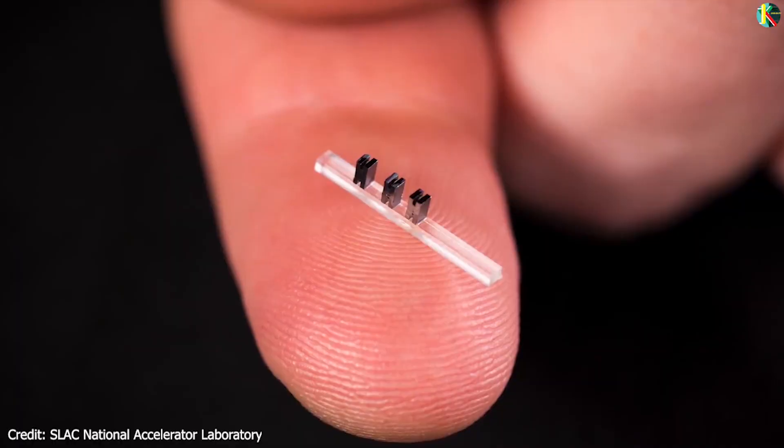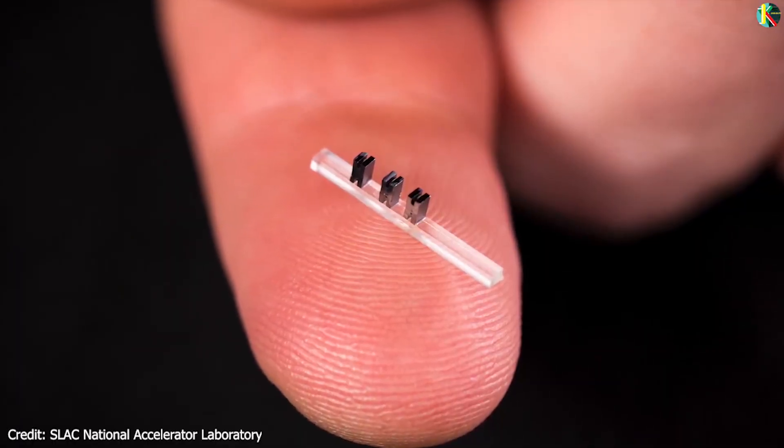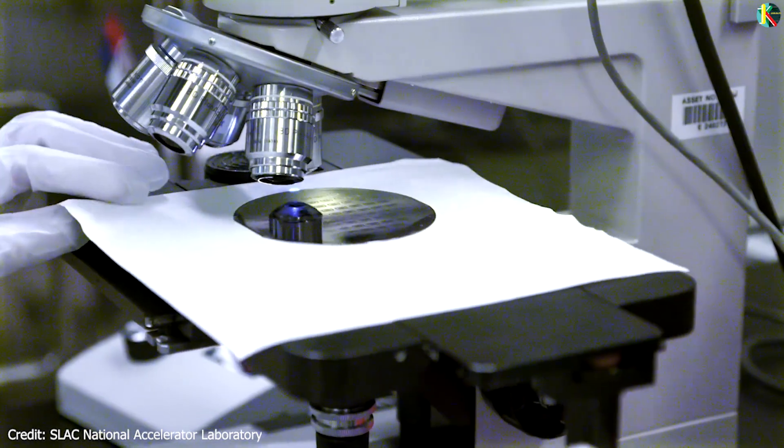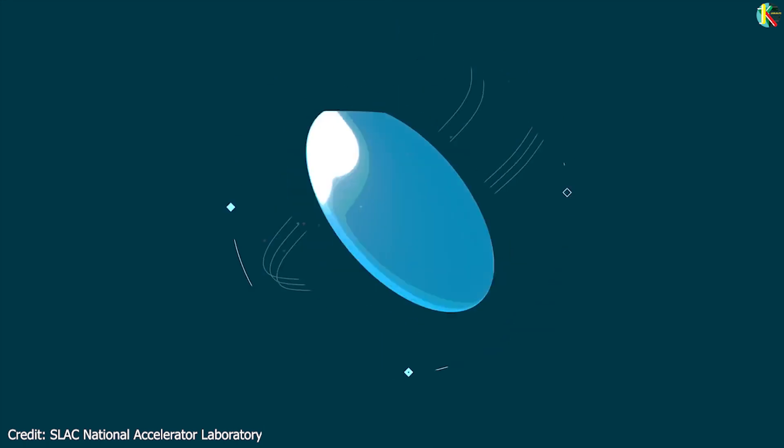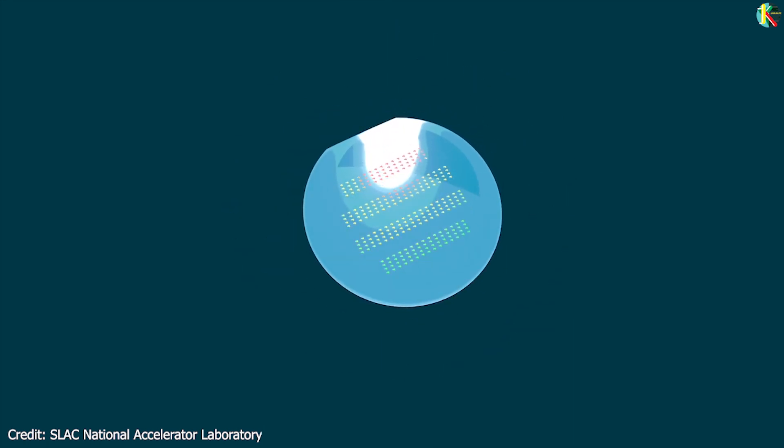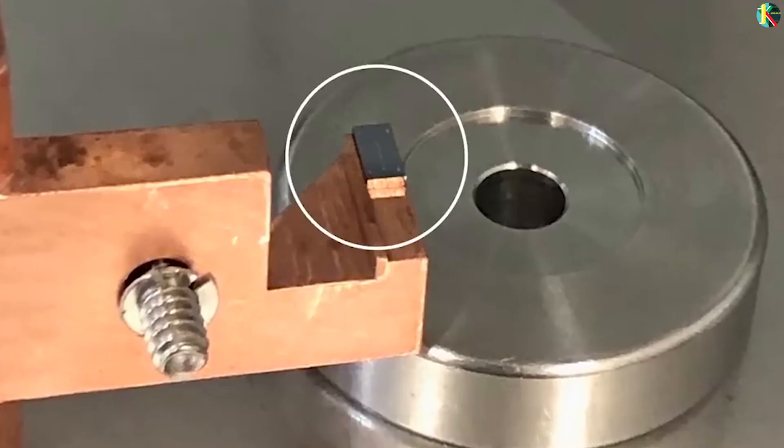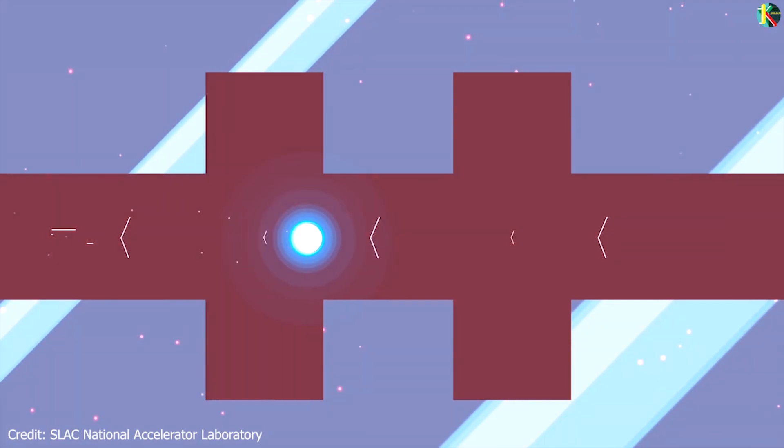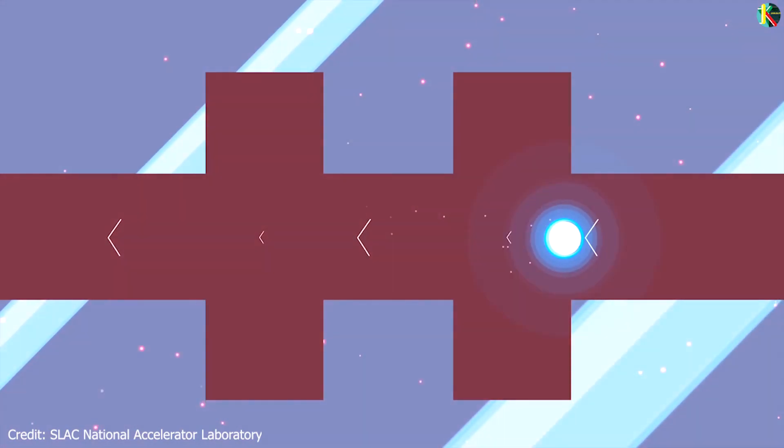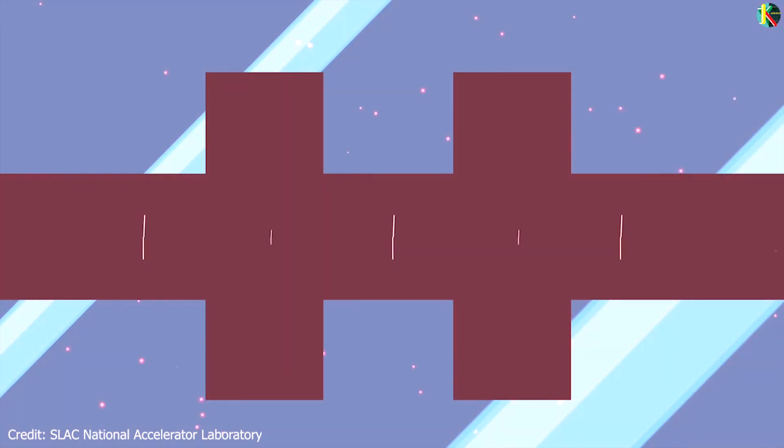But the team of Stanford and SLAC is the very first to have produced a functioning prototype of a miniature particle accelerator on a silicon chip. The researchers etched a nanoscale channel into their silicon chip and sealed it in a vacuum just like a big accelerator. They accelerated electrons along this channel using infrared laser pulses with high pulse rate. The whole process takes place within a width of roughly 250 nanometers.